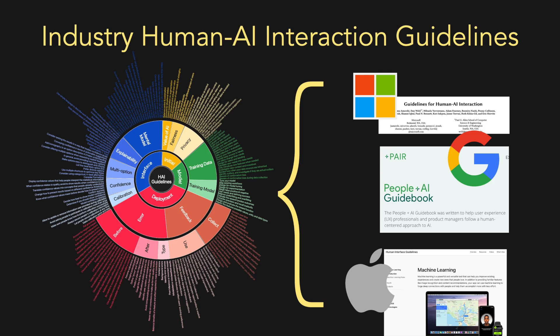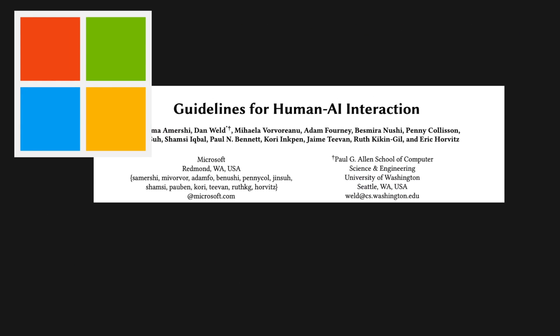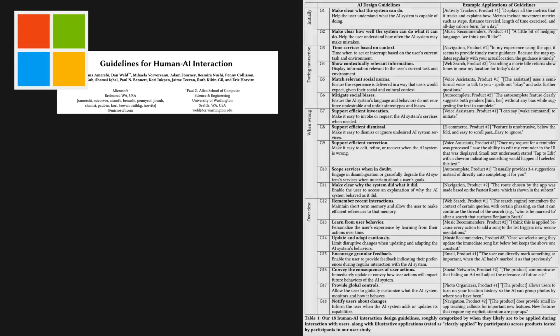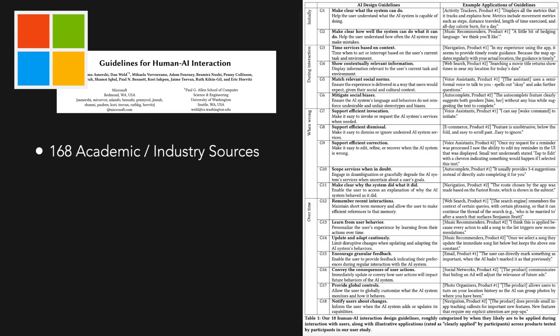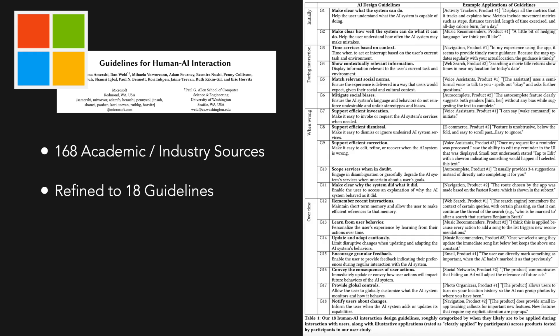The first set of guidelines is Microsoft's Guidelines for Human-AI Interaction, published in May of 2019 at CHI. Researchers from Microsoft surveyed over 168 potential guidelines from internal and external industry sources, public articles, and the academic literature. These were combined and reorganized into 18 guidelines with a common sentence style using a single verb, structured over when they're relevant to the user over the course of interactions. Microsoft then validated these guidelines based on a user study of AI practitioners.